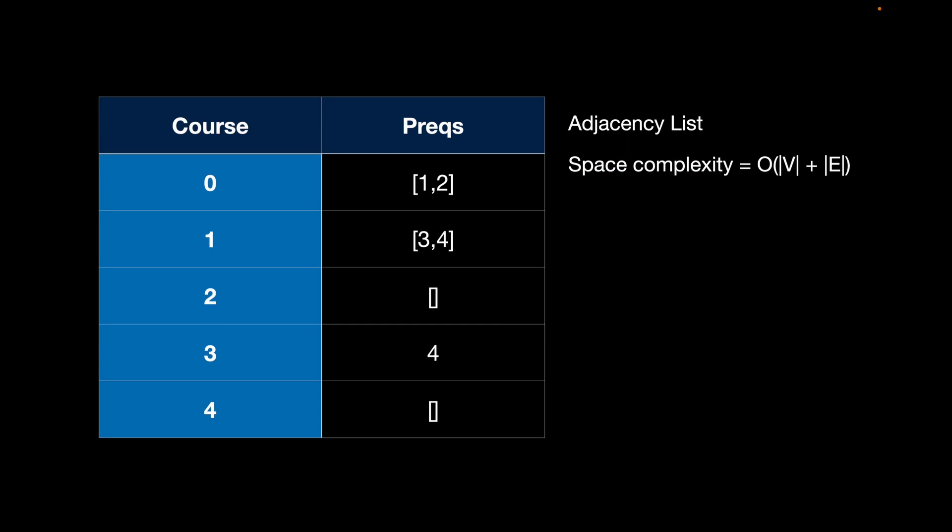The space complexity is O(V + E) — V for all the courses and E for the prerequisites — which is how big the adjacency list dictionary is going to be. The time complexity is exactly the same, O(V + E), because that's how we navigate the adjacency list.